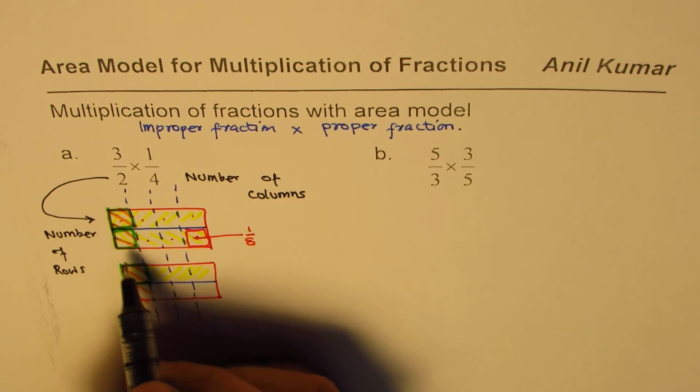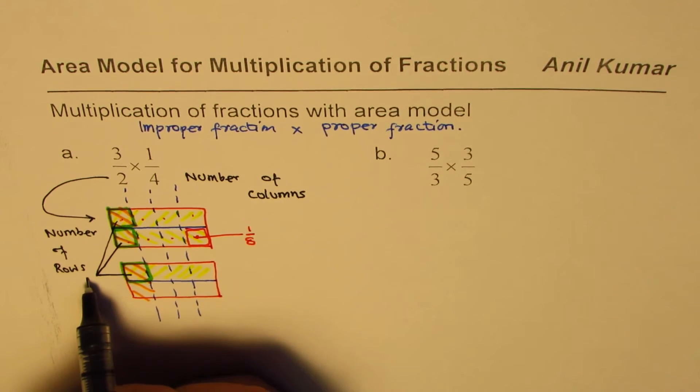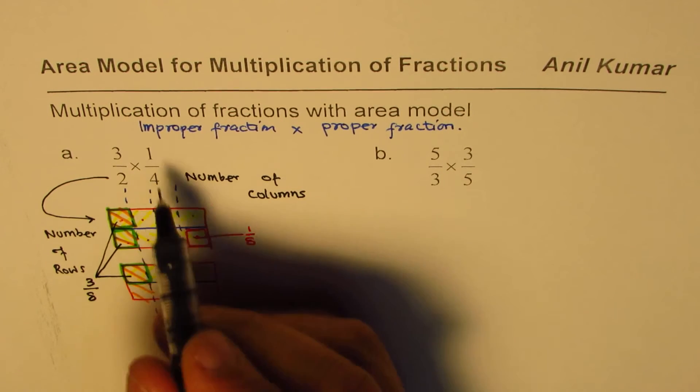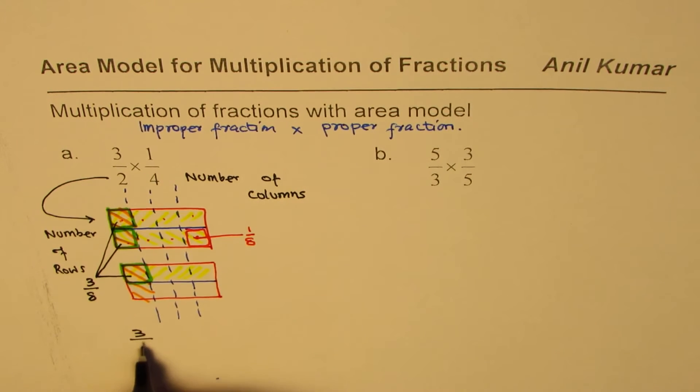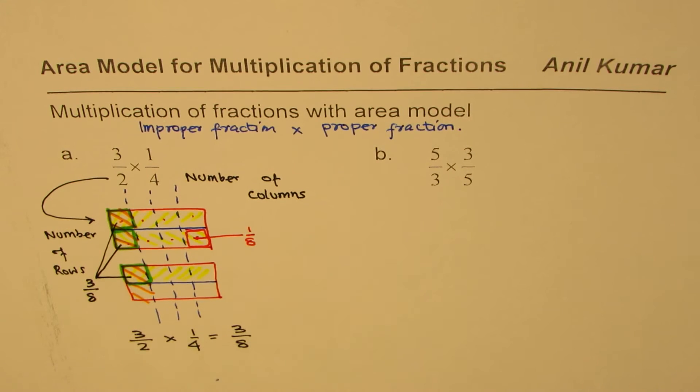So 3 one eighths is common. So these areas which I have mentioned here are the common areas, and they are 3 eighths. And therefore, we can write 3 by 2 times 1 by 4 is equals to 3 by 8. So I hope you have got the concept, how we get it.